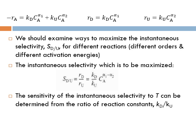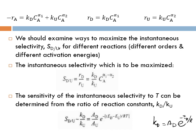The sensitivity of the instantaneous selectivity to temperature can be determined from the ratio of reaction rate constants, since the k's are functions of temperature. We write k_D / k_U using the Arrhenius equation: k_D = A_D × e^(-E_D/RT), so k_D / k_U = (A_D/A_U) × e^(-(E_D - E_U)/RT).